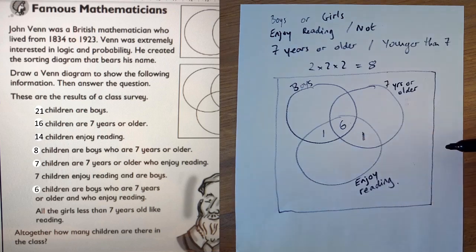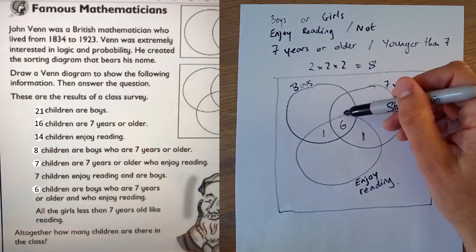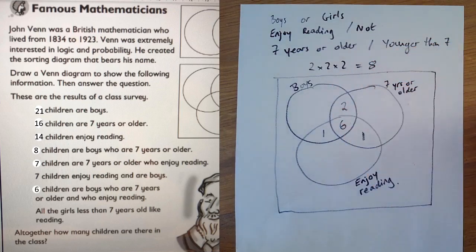The one above. Eight children are boys who are seven years or older. Boys seven years or older. It's these two. So this is two. Eight minus six.